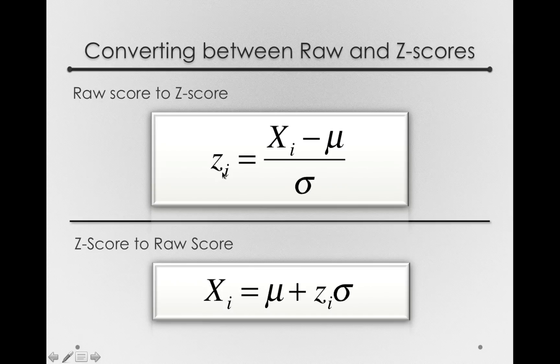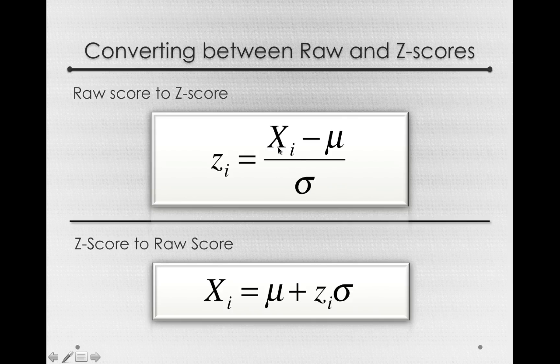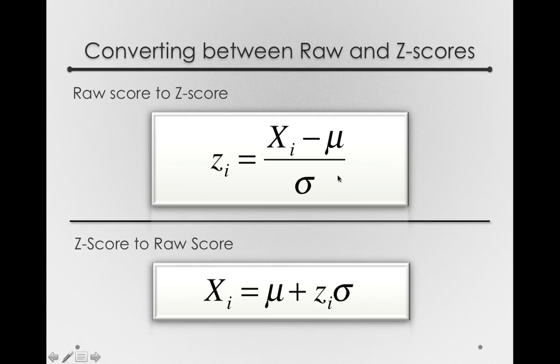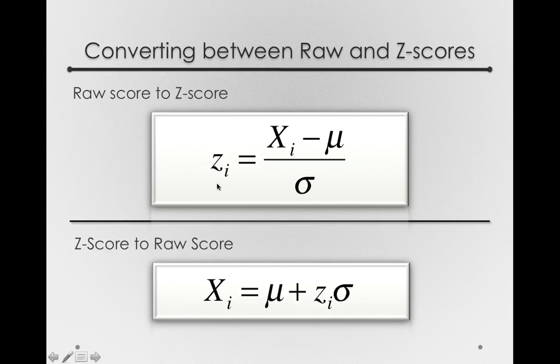Notice we can go right back to a z-score. If I give you your score of 115 and tell you the mean of the distribution is 100 and the standard deviation is 15, that's just 115 minus 100, or a value of 15 on the top, divided by 15, which would yield a z-score of positive 1.